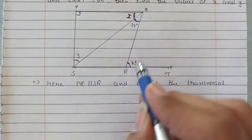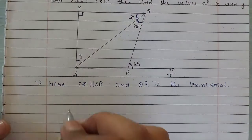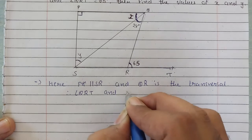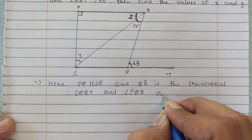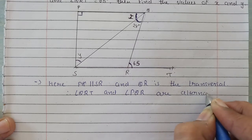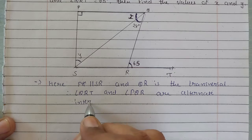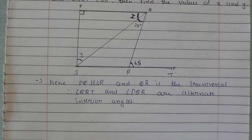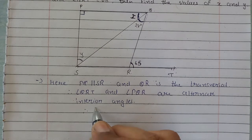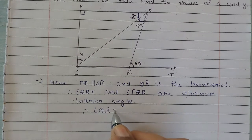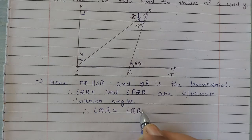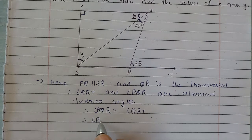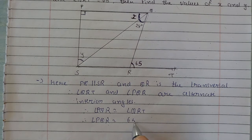That means angle QRT and angle PQR are alternate interior angles. That means angle PQR is equal to angle QRT. If we need to find PQR, that will also be equal to 65 degrees.